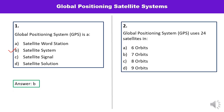Question number two: Global Positioning System GPS uses 24 satellites in how many orbits — 6, 7, 8, or 9 orbits? It uses 24 satellites in 6 orbits. You have studied it, and this is the correct answer.